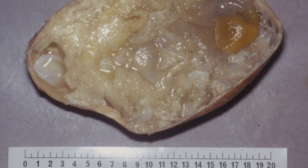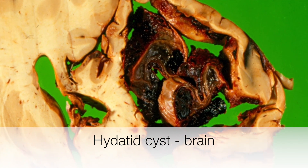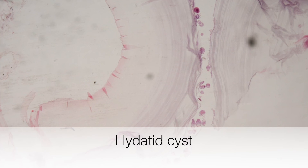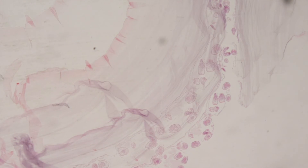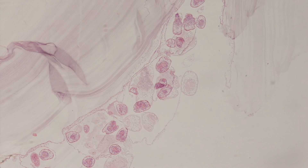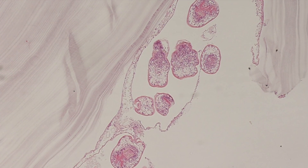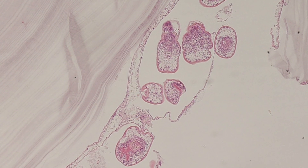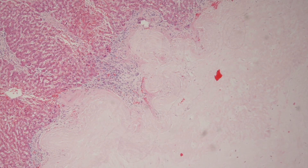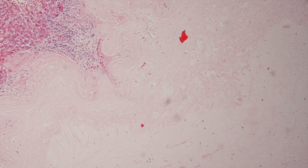Here is the gross appearance of a Hydatid cyst, measuring 20 centimetres in diameter. Here is a Hydatid cyst in the brain. This is the low-power histological appearance of a Hydatid cyst: on the left side you can see the laminated acellular layer, and on the right side are the brood capsules — daughter cysts containing protoscolices. Here is a higher-power view of protoscolices and scolices; the scolices, when ingested by the definitive host, will attach to the gut lining and develop into adult tapeworms. Finally, this is the histology of a liver containing a healed Hydatid cyst: the left side shows liver parenchyma and the right side shows a cellular fibrous cyst wall.